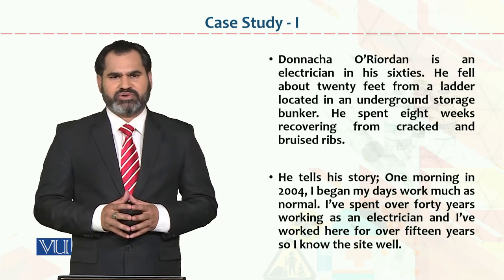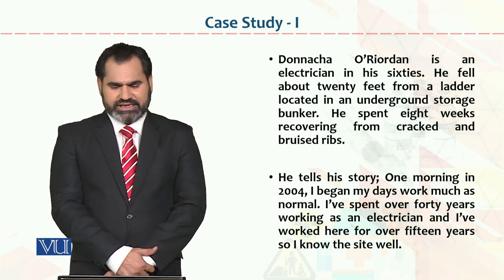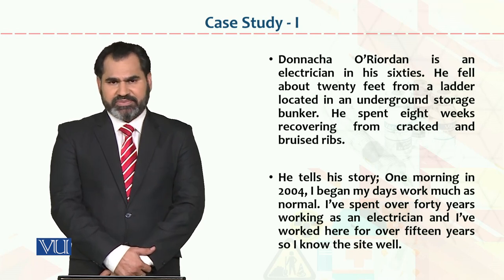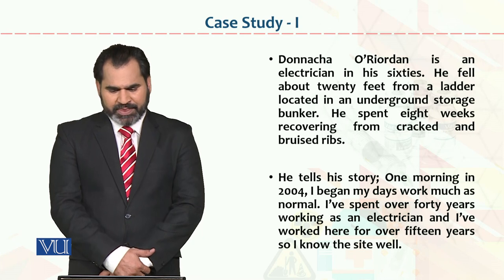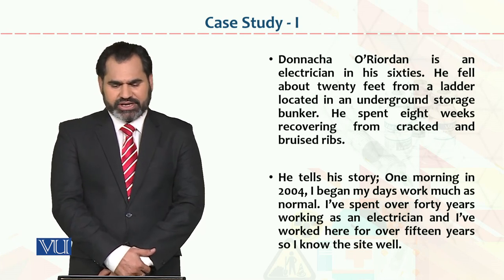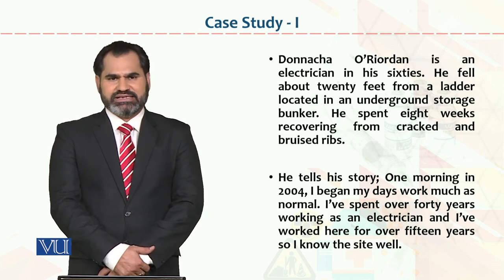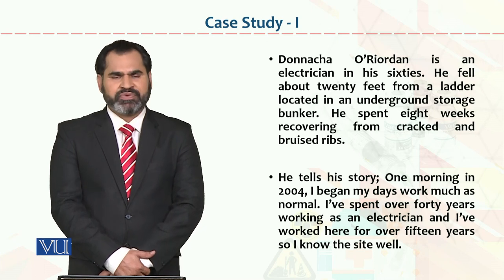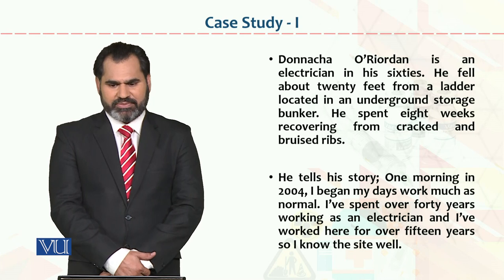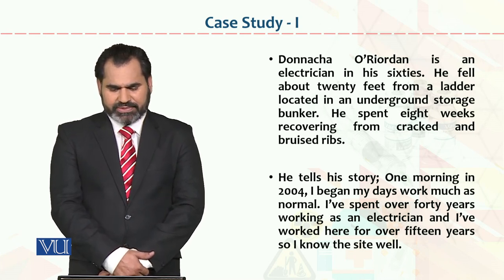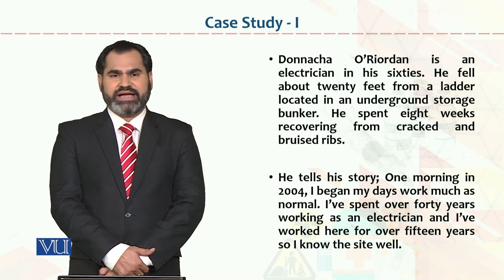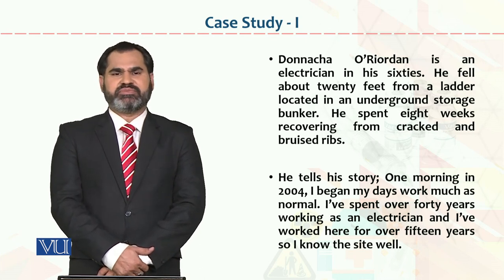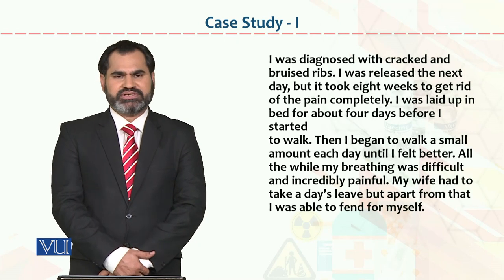Let's discuss this case study in detail. Donaka O'Riordan is an electrician in his 60s. He fell about 20 feet from a ladder located in an underground storage bunker. This was part of his electrician job in a larger work area. He spent eight weeks recovering from cracked and bruised ribs. The person suffered rib damage and also experienced communication difficulties. He now tells us his story.